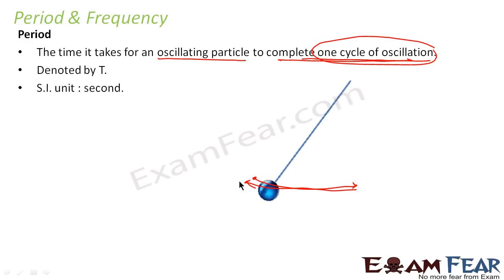So the time it took for this object to move from, let us say this is point A to point B, and then coming back from point B to point A. So this total time is known as period of an oscillation.